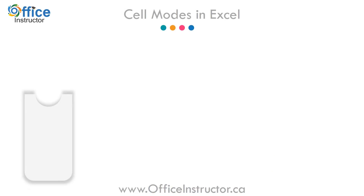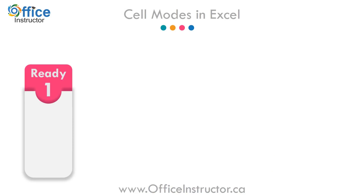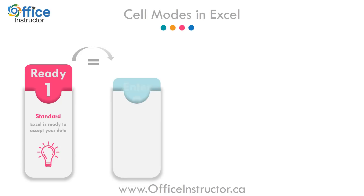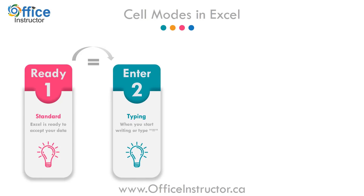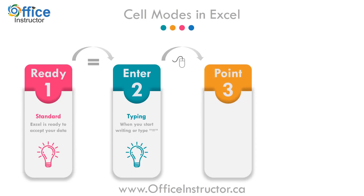What are the cell modes? The ready mode is the default mode and it means Excel is ready to accommodate whatever you type. If you type a value or an equal sign, Excel automatically switches to the enter mode. While in the enter mode, clicking on a cell with your mouse or using the arrows on your keyboard switches to the point mode. Hitting enter takes you back to the ready mode and so on.